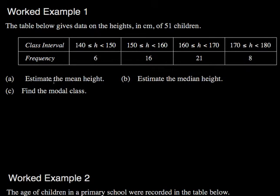So how would we estimate the mean height from this? We have to make some assumptions. Because it's asking us to estimate it, we can estimate that the height of children in this first interval is the midpoint. And the midpoint I'm going to do up here. So this is 145, this is 155, this is 165, this is 175.